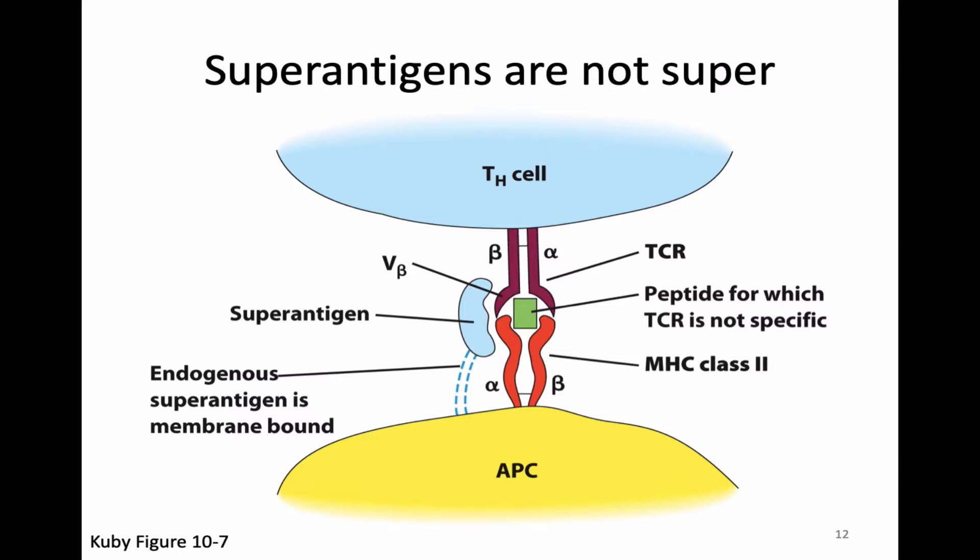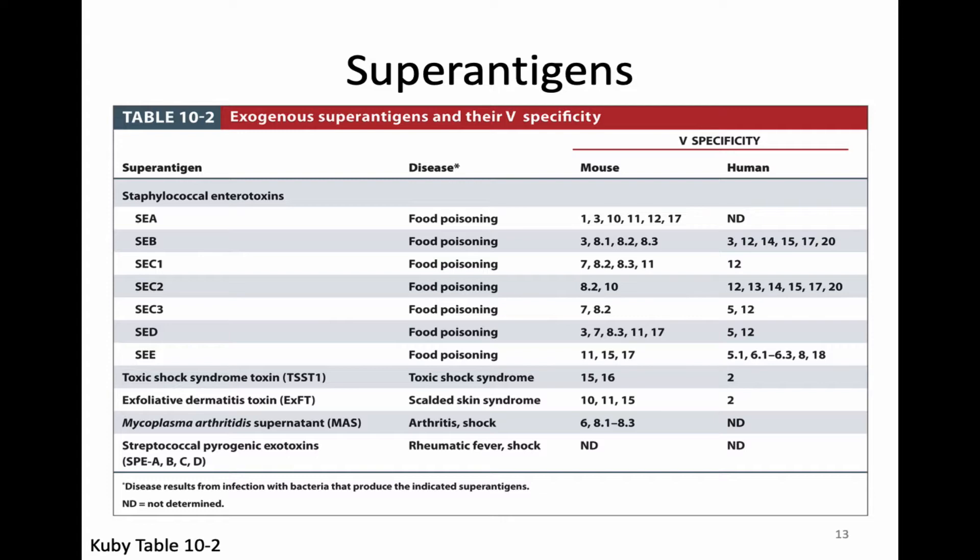There are some examples of superantigens that exist. Many of the toxins coming from staphylococcal organisms that result in food poisoning are superantigens. Another particularly famous superantigen is toxic shock syndrome toxin, which is part of toxic shock syndrome from bacterial infection.